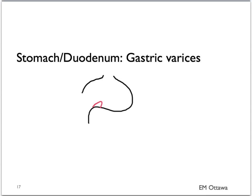Varices can also be found in the stomach, though very occasionally. They are also due to cirrhosis and portal hypertension, and similar to esophageal varices, they can bleed really quickly as well.